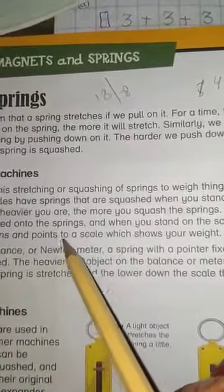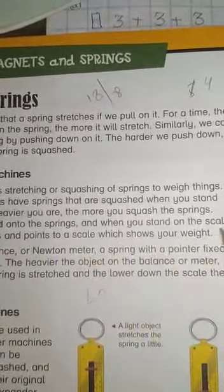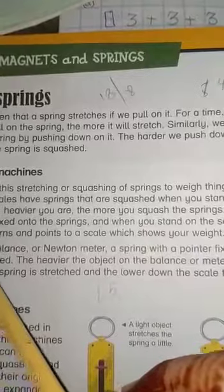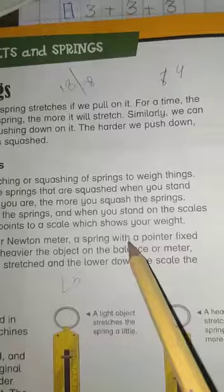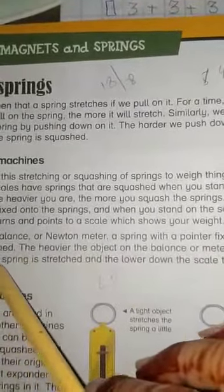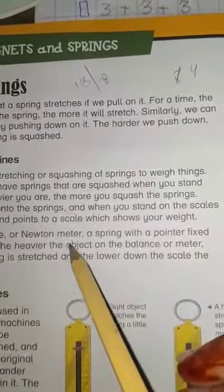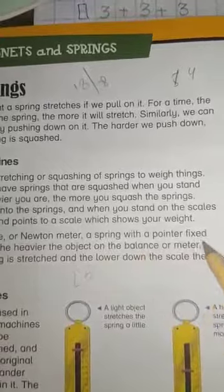In a spring balance or Newton meter, a spring with a pointer fixed to it is stretched. The heavier the object on the balance or meter, the more the spring is stretched.